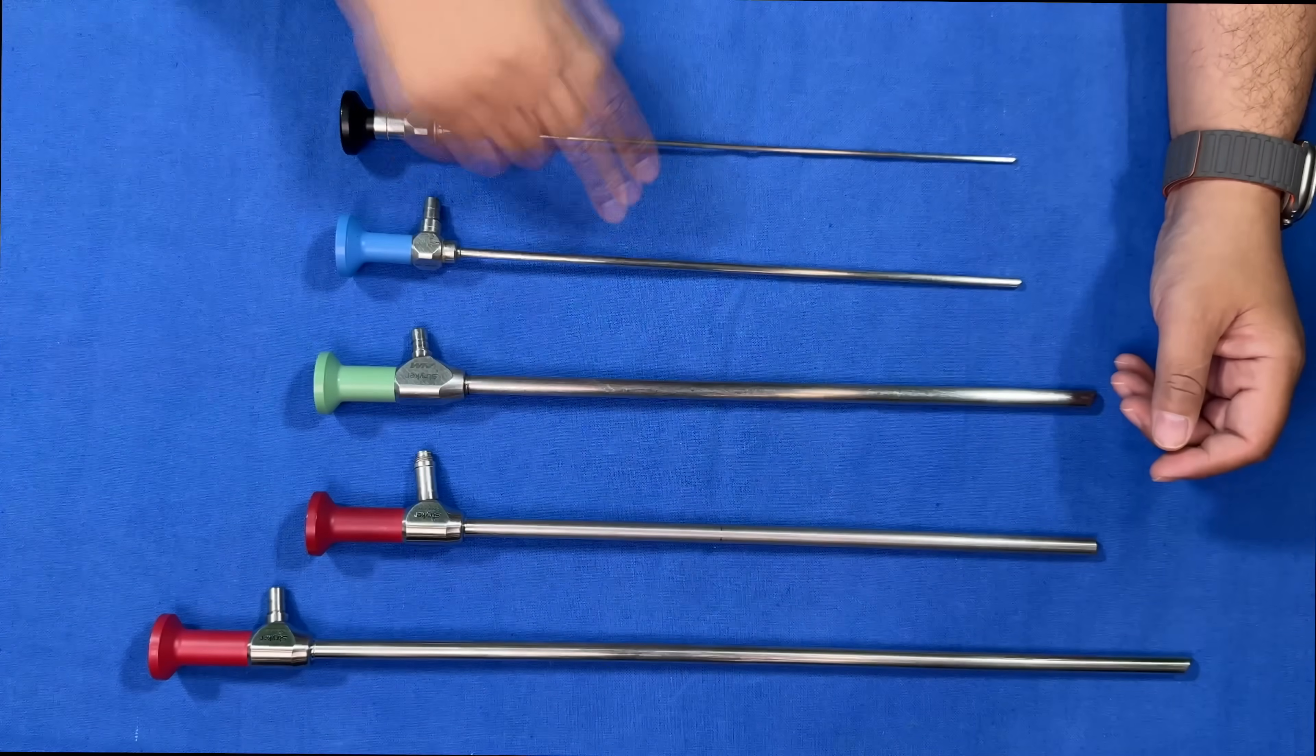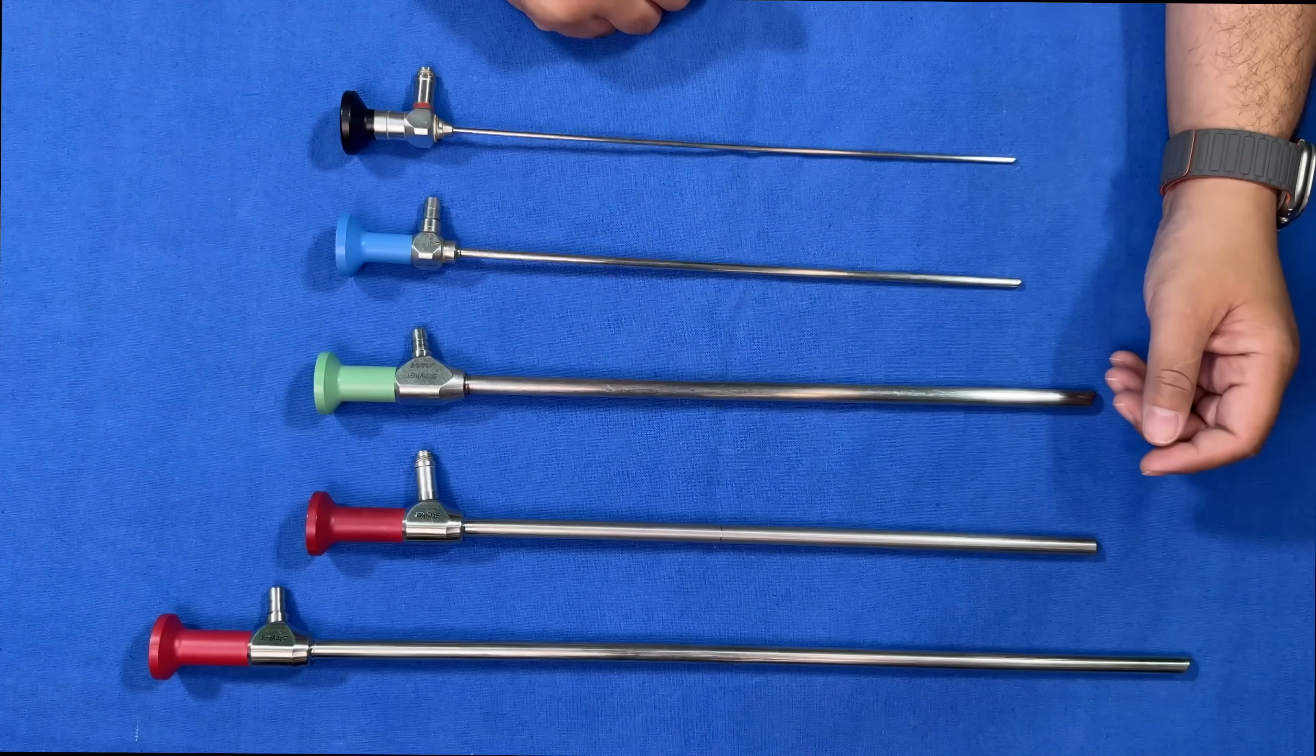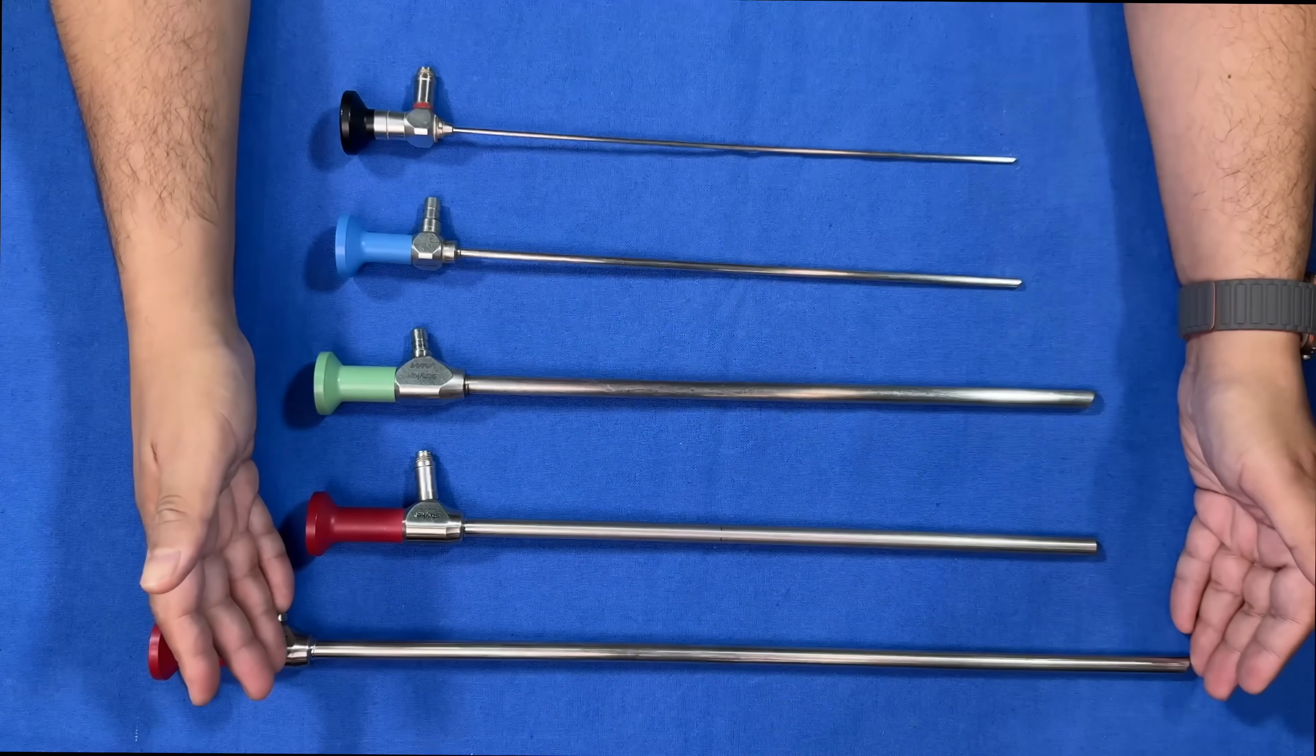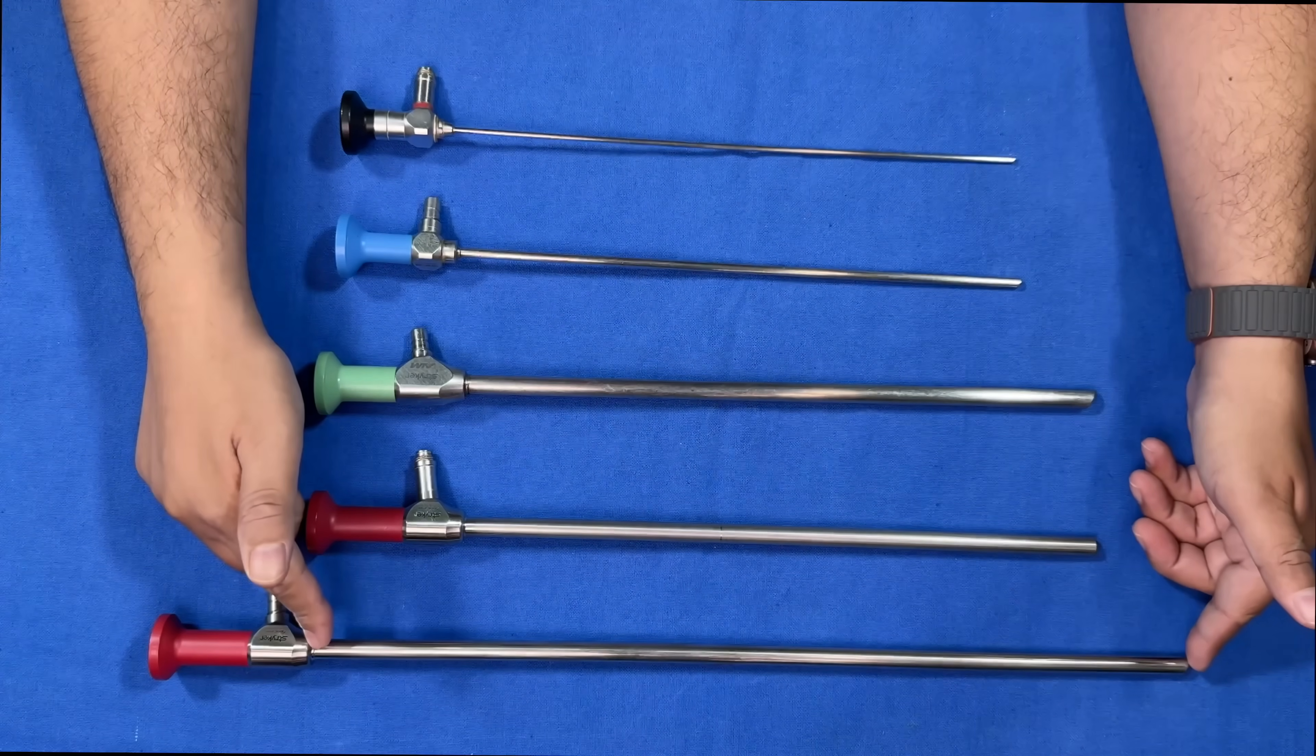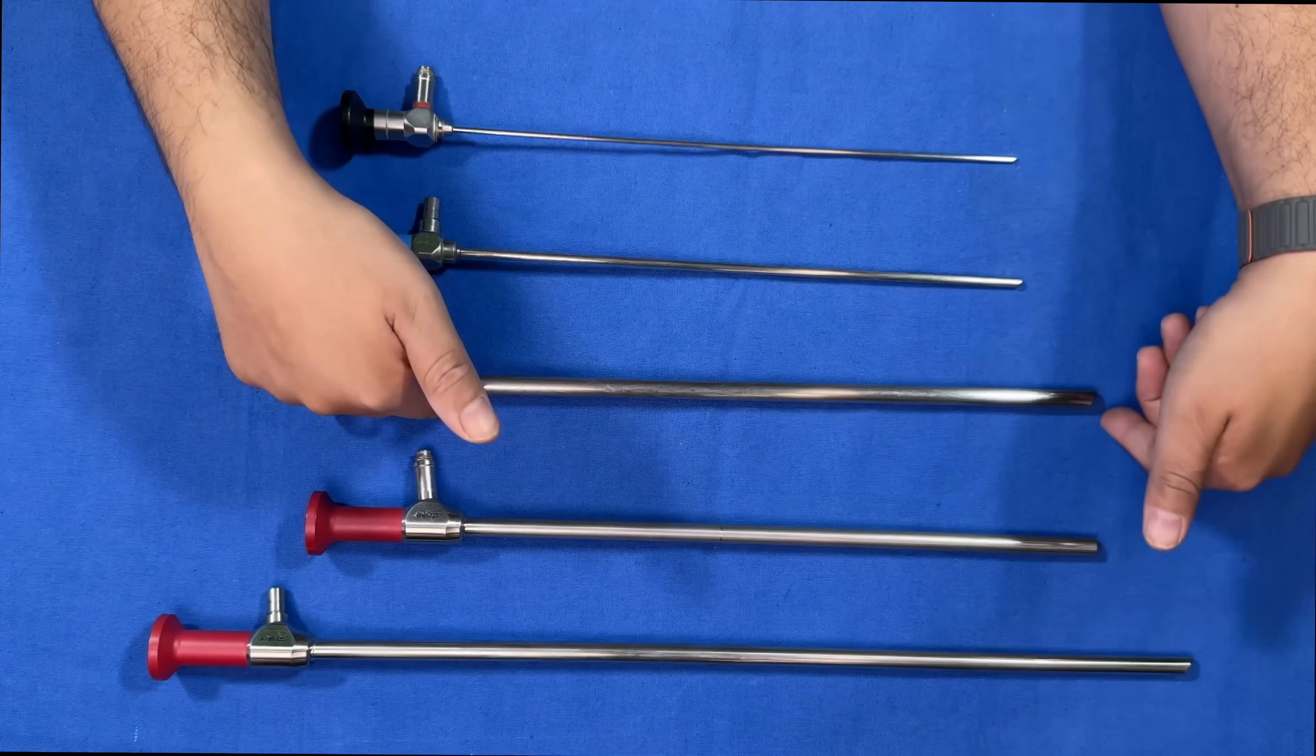These three are 5 mm diameter and the last one is around 2.9 mm in diameter. Regarding length, this is used for obese patients, especially for bariatric surgeries. The length from the tip to this part is around 45 centimeters.